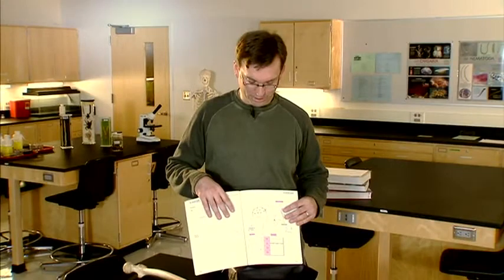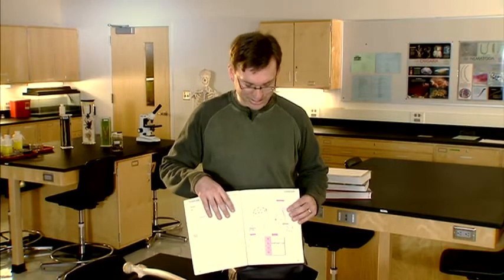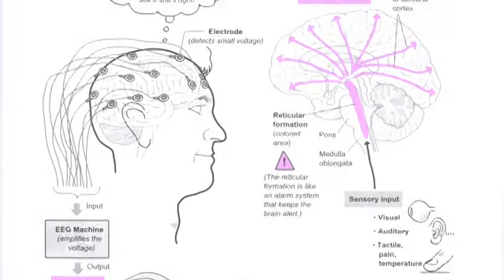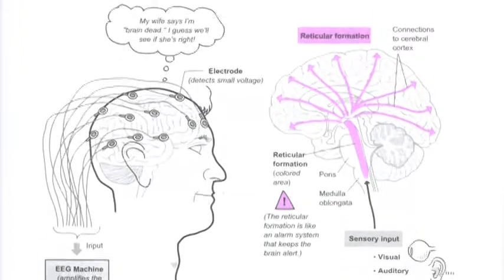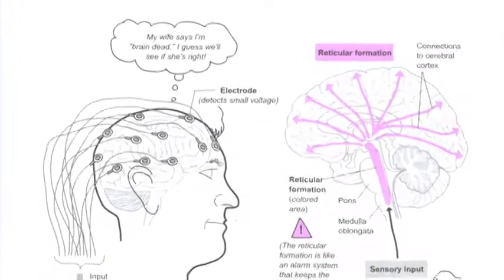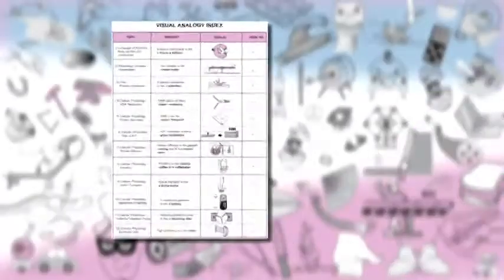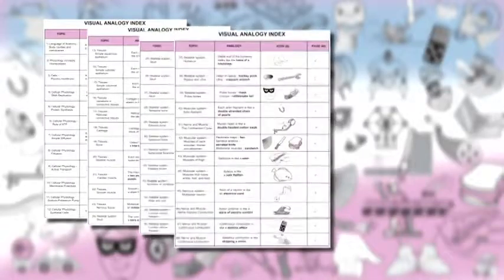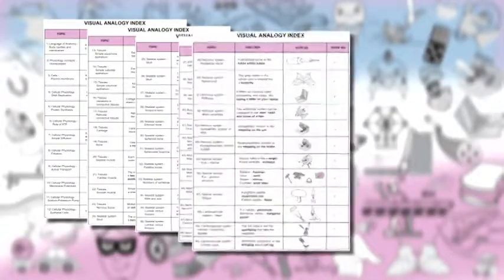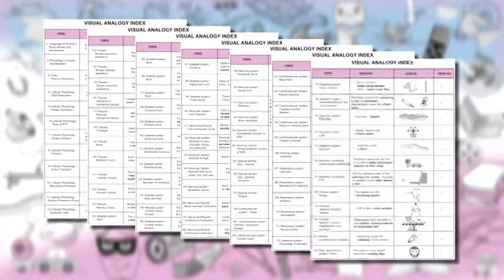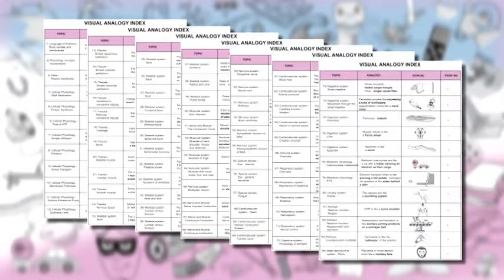Humor is also a component of the book, as you can see from this module that talks about measuring brain waves. The thought bubble reads: 'My wife says I'm brain dead — I guess we'll see if she was right.' There are so many visual analogies inside this book series that we created a visual analogy index at the beginning of the book to showcase them all and make for easy reference for students.